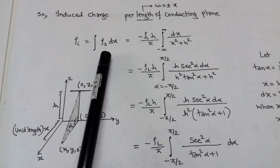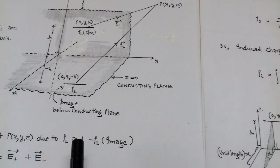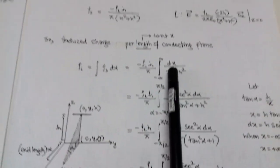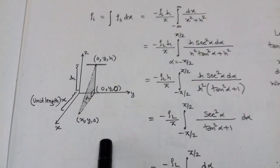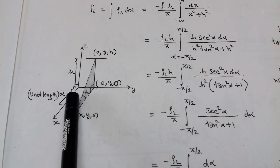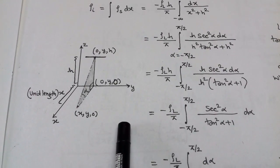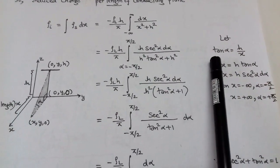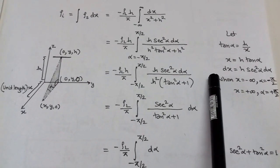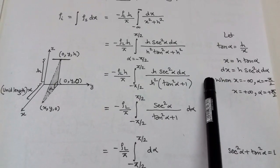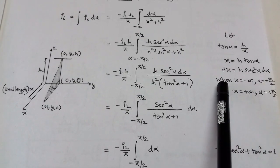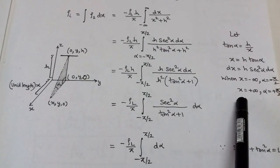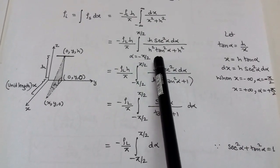To get the induced charge per length, we integrate the surface charge density with respect to x, giving rho_s*dx. After substitution, from the figure we see that tan(alpha) equals h upon x. So we assume x equals h*tan(alpha), and differentiating, dx equals h*sec^2(alpha)*d*alpha. In place of dx we put h*sec^2(alpha)*d*alpha, and in place of x we write h*tan(alpha).